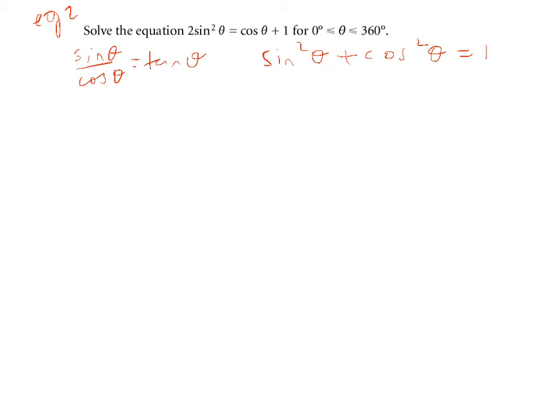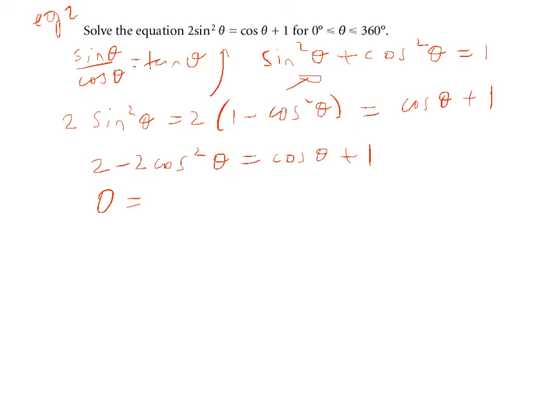I can therefore rearrange this so instead of writing two sine squared theta we can write two times one minus cos squared theta, and that's from this identity here, equals cos theta plus 1. If we expand this out and bring everything over to one side, you may want to pause the video now and try that yourself, we will have 2 minus 2 cos squared theta equals cos theta plus 1, and if we bring everything over to one side we'll have 0 equals 2 cos squared theta plus cos theta minus 1.